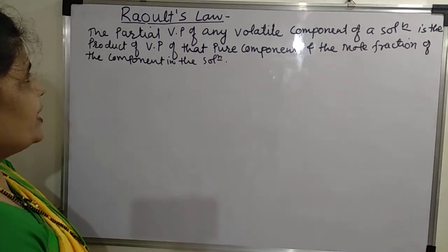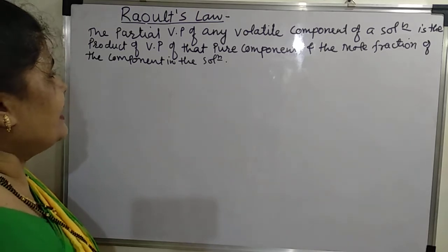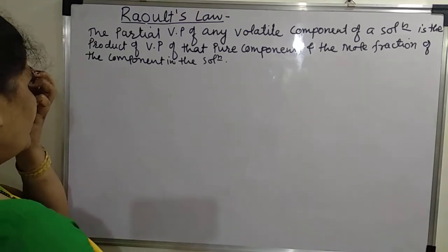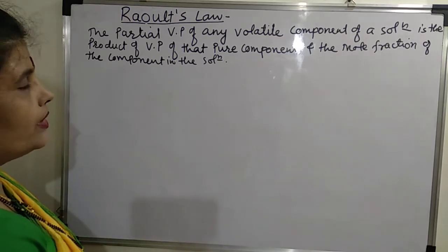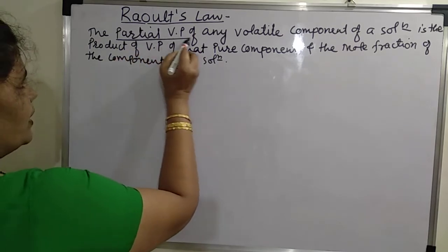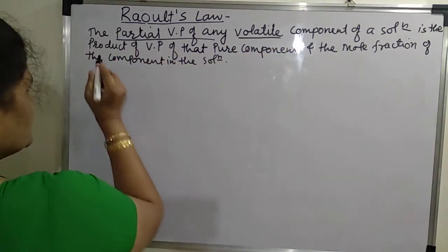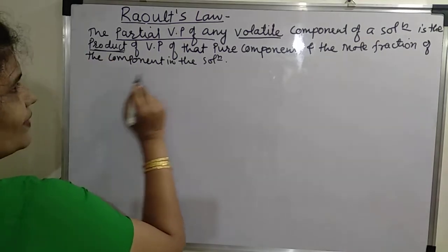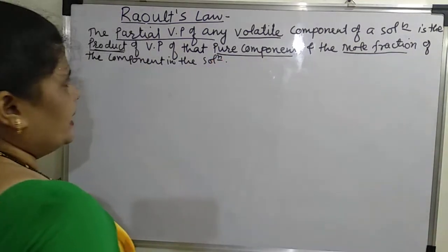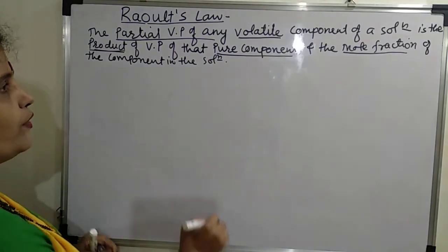In this video, we are going to see a very important concept which can be asked for three marks. That is Raoult's Law. The partial vapor pressure of any volatile component of a solution is the product of the vapor pressure of the pure component and its mole fraction in the solution. To know what mole fraction is, please refer to the mole fraction video.